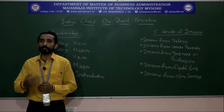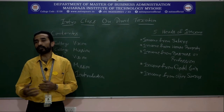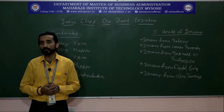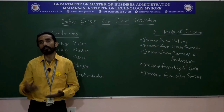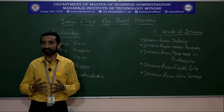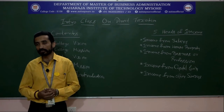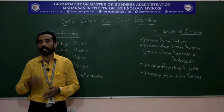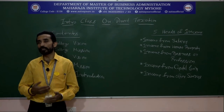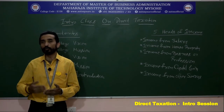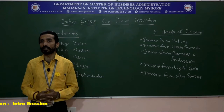Unit 3 covers income under the head profits and gains of business or profession. You will study the computation of income from business and profession, accounting methods for business deductions and allowances, maintenance of books of accounts, and depreciation-related aspects. Numerical problems will be based on depreciation, business income, and professional income — for example, for a doctor or an engineer.